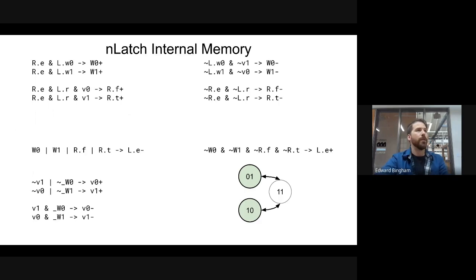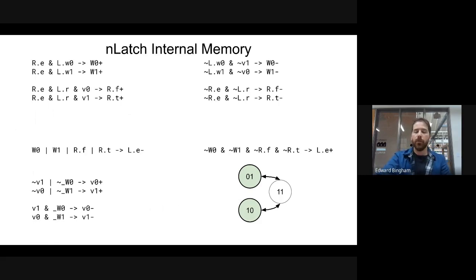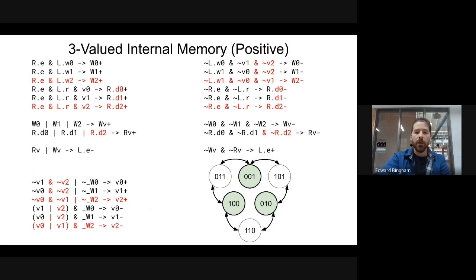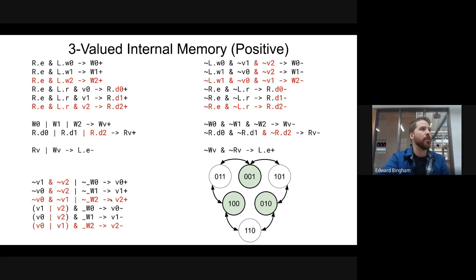Now we need to go through a bunch of different internal memory structures. Previously we covered the nlatch internal memory, which switches between one-zero and zero-one as the two valid states, jumping to neutral state one-one in between. However, there are a much wider variety of internal memories. We can expand the nlatch to make it three-valued — unfortunately the number of transistors doubles. If you wanted four values, you could do two nlatches with the same number of transistors, but a three-valued nlatch has less energy than two nlatches. We add another request for the write — L.w2 — and another request for the read on v2, added into wv and rv, and the same on the reset phase.